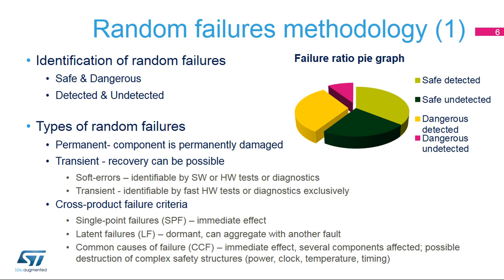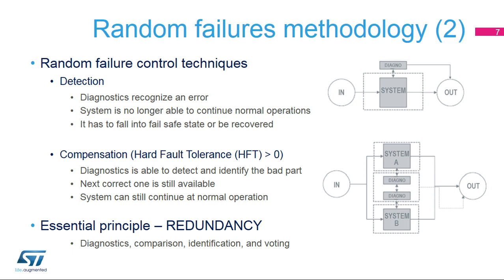Software tests can never compensate for these temporary and short-lived errors efficiently, as they are considerably slower and limited by their execution time. Using ISO 26262 terminology, we can recognize single-point, latent, or common types of failure causes. Common causes of failure require a special focus, as they can potentially destroy even quite complex safety structures. When random failures are detected and cannot be compensated for, the system has to be stopped and placed into a safe state or go through a recovery process like reset, rollback, or a specific check function. Compensation methods usually allow the system to continue operating normally, while using error correction, passivation, or masking functions. Generally, a voting process is used to identify the damaged part or incorrect data, which is then replaced by the correct one.